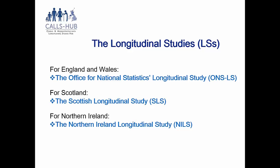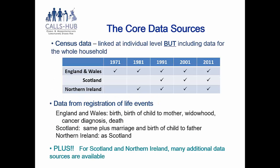The longitudinal studies or LSs are large individual-level datasets. Each has a sample of the country's population — one for England and Wales, one for Scotland, and one for Northern Ireland. There are two core data sources common to all three LSs. The first is the census. For England and Wales, the earliest census included is 1971; for Northern Ireland it's 1981; and for Scotland, 1991.